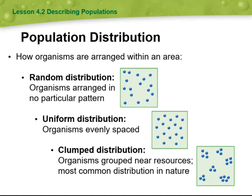Then we have population distribution — how organisms are arranged within an area. We have three types of distributions: random, uniform, and clump distributions.